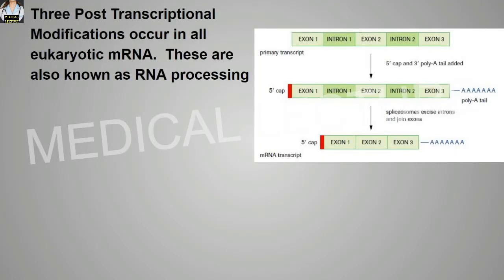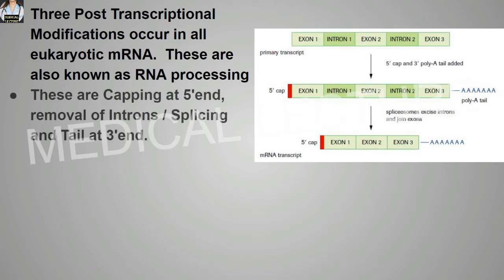Three post-transcriptional modifications occur in all eukaryotic mRNA, also known as RNA processing. These are: capping at the 5' end, removal of introns (splicing), and tailing — the polyadenylate tail at the 3' end.